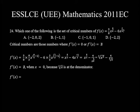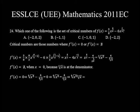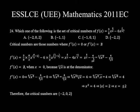Setting f'(x) = 0: (cube root of x)⁵ − 4/(cube root of x) = 0, so (cube root of x)⁵ = 4/(cube root of x). Multiplying both sides by cube root of x: (cube root of x)⁶ = 4, which gives x² = 4. Taking the square root: |x| = 2, so x = ±2. Therefore the critical numbers are −2, 0, and 2. Choice A is the correct answer.